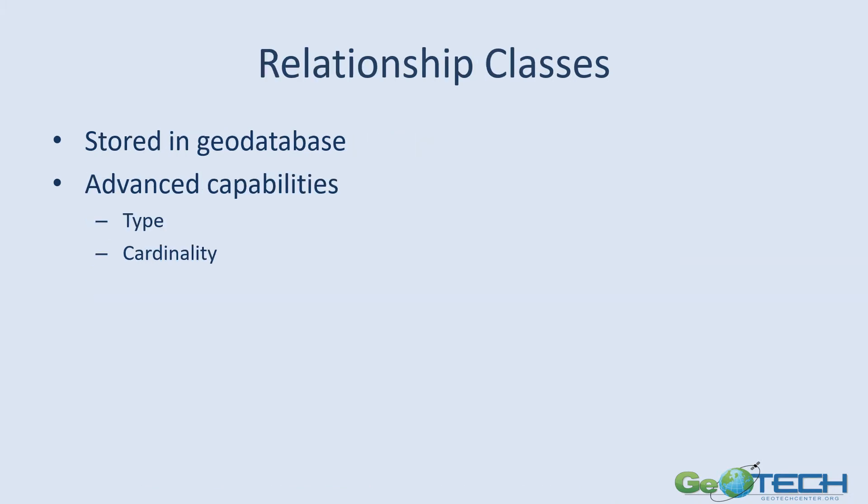Regardless of whether you're using joins or relates, keep in mind that these behaviors are temporary, especially in the join case. What I mean is it will only append the data from the external table to your feature class for the duration of your map session — it doesn't actually copy the data into your feature class permanently. So if you need a more permanent solution or more advanced relationships, you may want to use a relationship class.